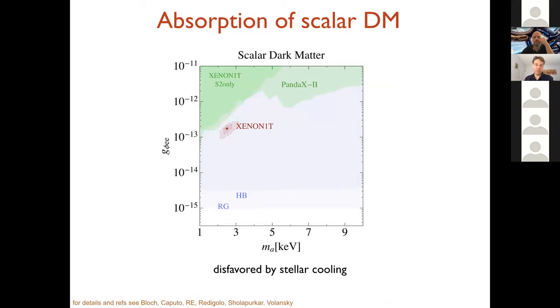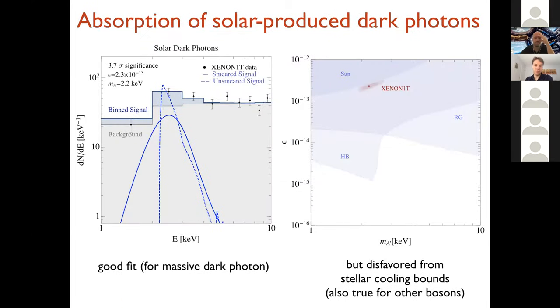Now other things don't work so well. Let's give you one example of something that doesn't work well. Here I'm showing the same thing for scalar dark matter. So instead of a dark photon, you have a scalar. And the Xenon 1-Ton excess can be fit very well, of course. But now if you look at the constraints, the constraints are much, much stronger than the couplings that you need to explain the excess.